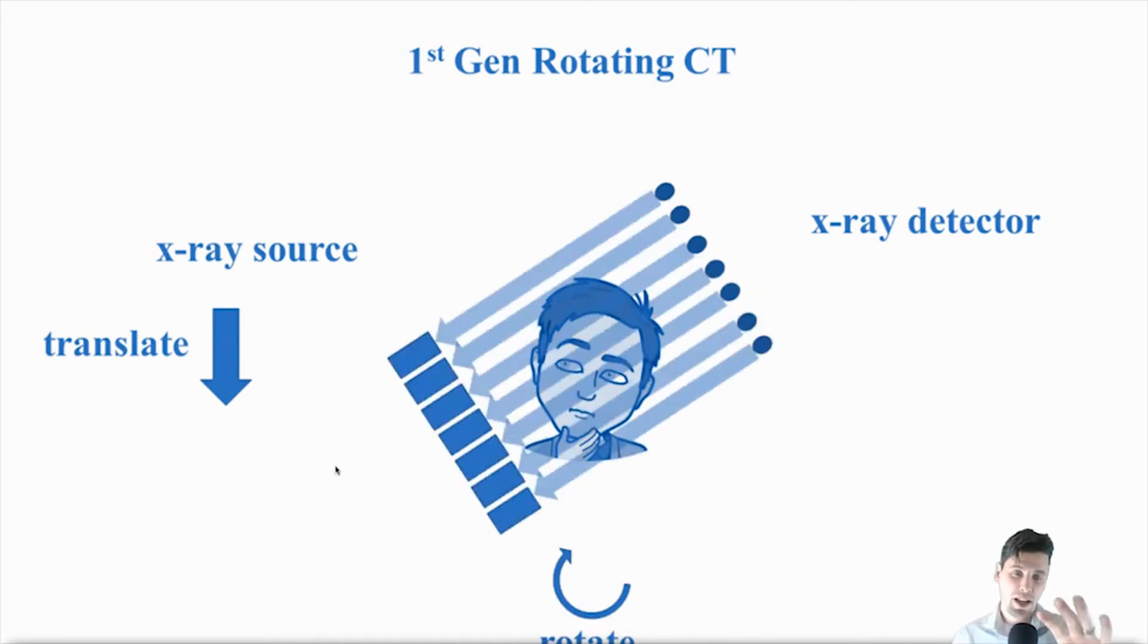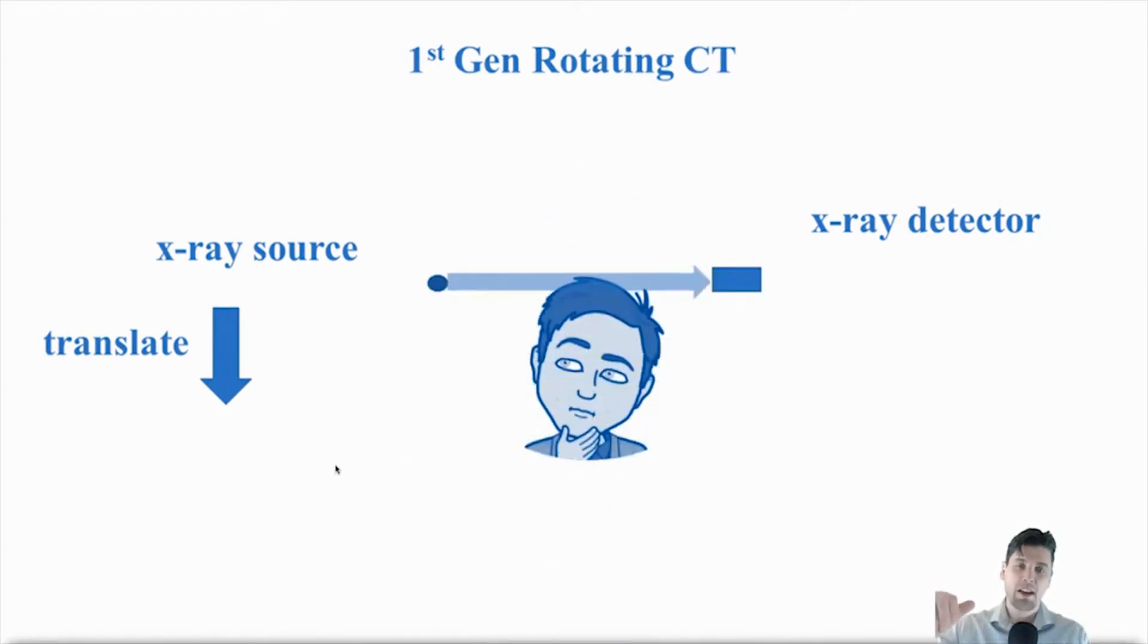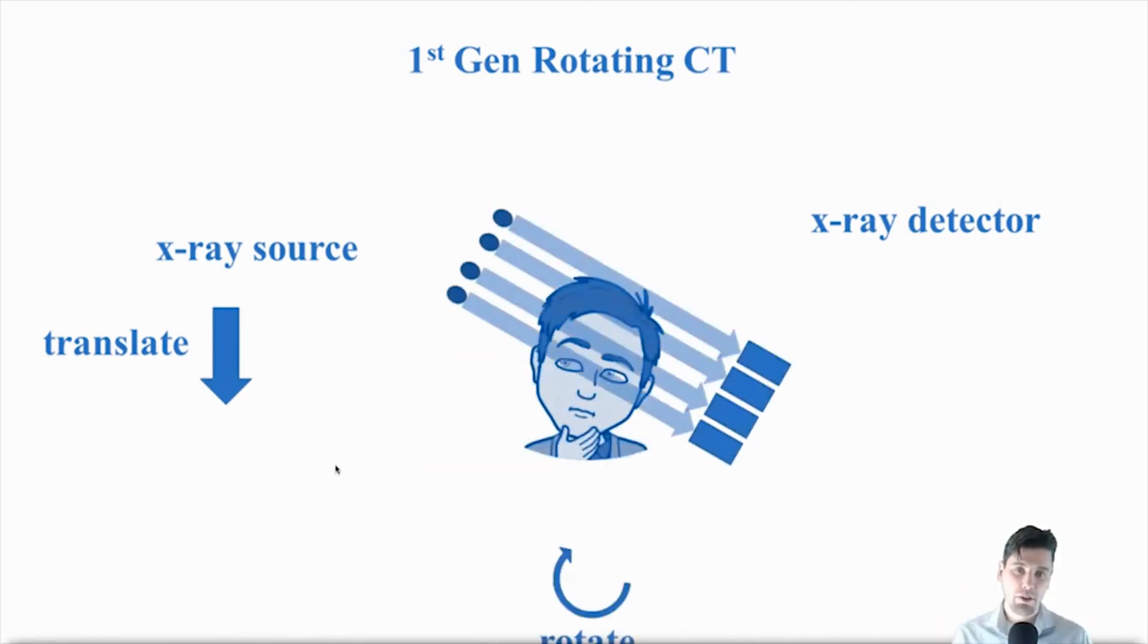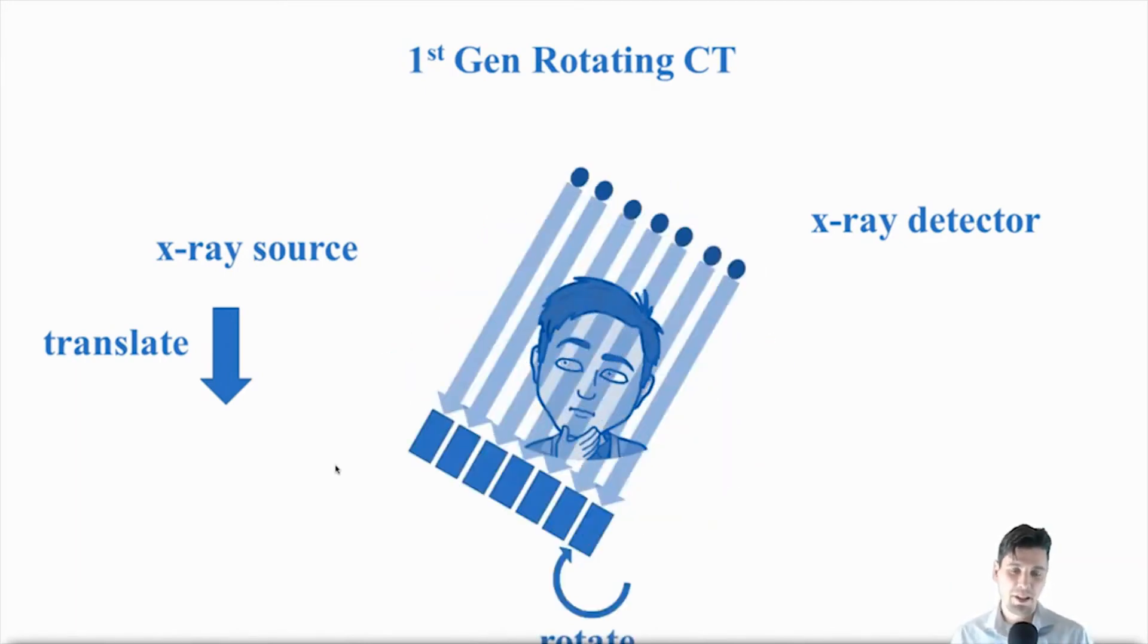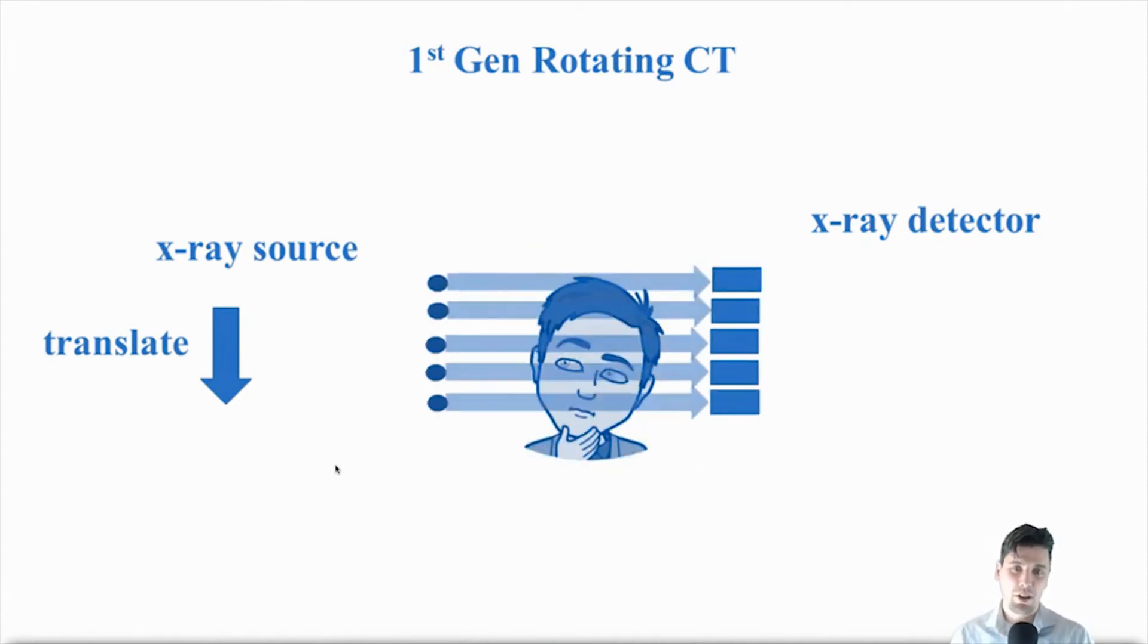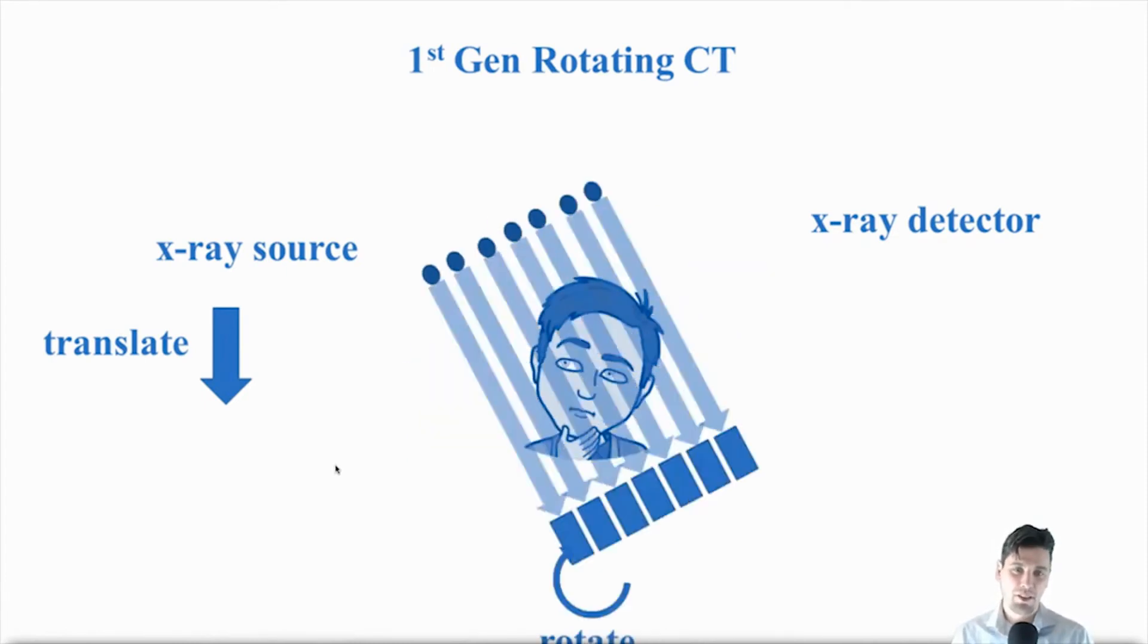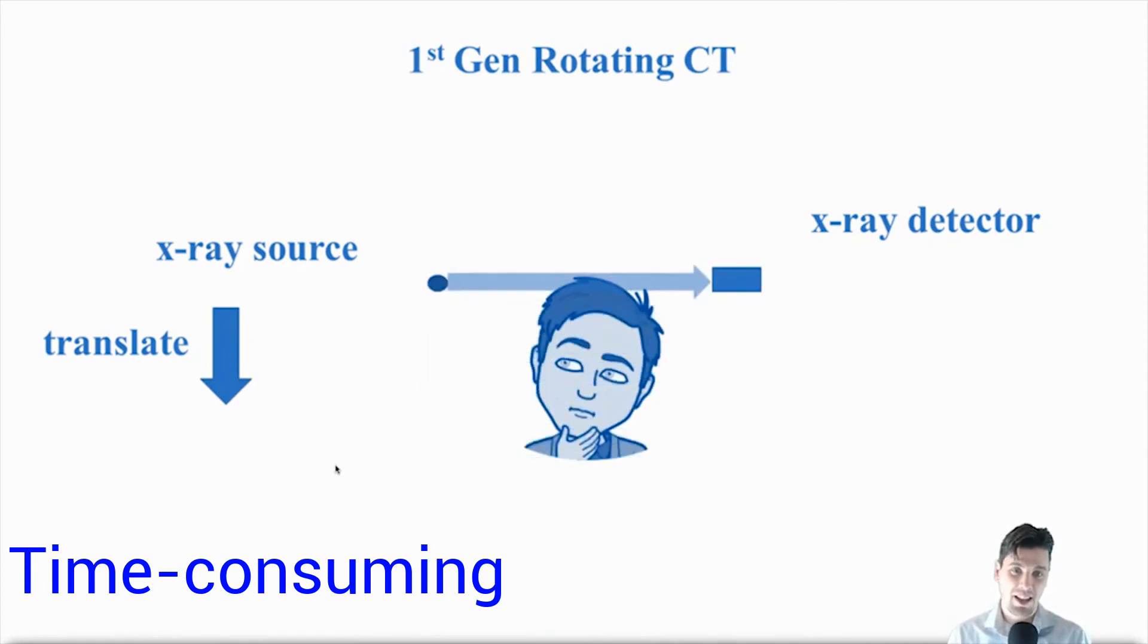From there we would have to rotate the whole gantry and we would have to then acquire another view and continue rotating and translating. So this is very time-consuming and that's why these scans were not very quick at all. But in general this is how CT scanning first started.